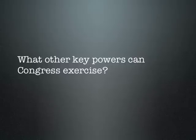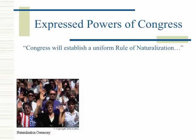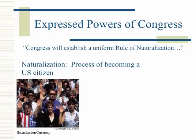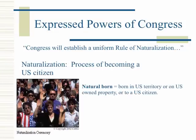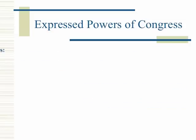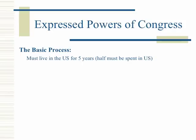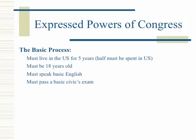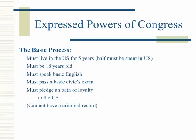Congress will establish a uniform rule of naturalization — the process of becoming a United States citizen. Natural born means born in the U.S., a U.S. territory, on U.S.-owned property, or to a U.S. citizen. Naturalized citizenship is gained from another country. The basic process requires: living in the U.S. for five years, being 18 years of age, speaking basic English, passing a basic civics exam, pledging an oath of loyalty to the U.S., and having no criminal record.